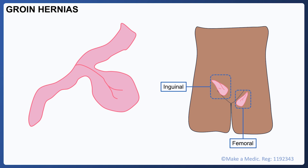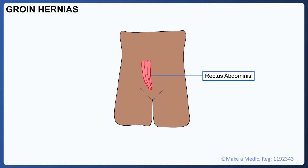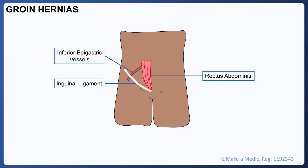Within the category of inguinal hernias there are two types: direct and indirect. These differ based on where the bowels enter the inguinal canal. In the case of direct inguinal hernias, the bowels enter the inguinal canal directly through a weak point in the posterior wall of the inguinal canal called Hesselbach's triangle. This is delineated by three main structures: the rectus abdominis, the inguinal ligament, and the inferior epigastric vessels.